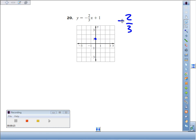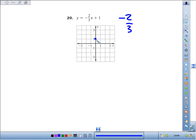Now, we can associate the negative with the two, we can associate it with the three, but we can't associate it with both. I like to associate it with the numerator. It tells me to move to another point, go down two, and move right three.